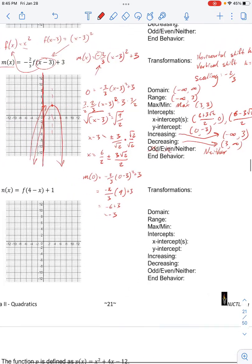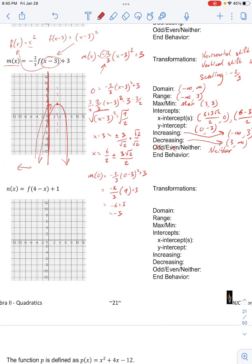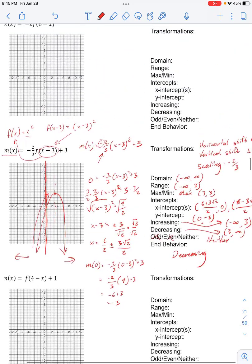And our end behavior, if we look at going to the left and to the right, our end behavior is negative, reaching towards negative infinity. So we are decreasing to the left and right.